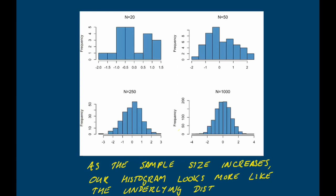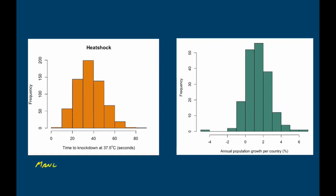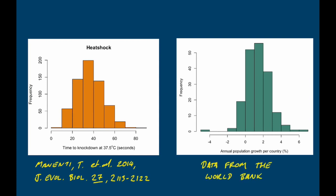So that's our normal distribution with a nice symmetrical bell-shaped curve. Let's look at a couple of real examples, because normal distributions do happen in biology. On the left we have time to knock-down at 37.5 degrees for some Drosophila — a nice bell-shaped curve, with perhaps a hint of slight positive skew, but at least approximately normal. On the right we have data from the World Bank showing annual population growth per country for 183 countries around the world in 2014, which again shows a nice normal distribution.